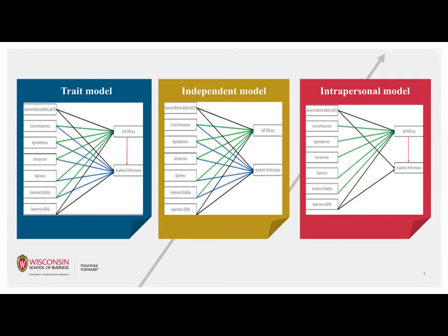In the independent model, the direct link from self-efficacy to performance is removed to test the validity of the effect of self-efficacy on performance. In the interpersonal model, we examine whether the Big Five Traits operate completely through self-efficacy, because those beset with self-doubt may not even engage in academic activities.